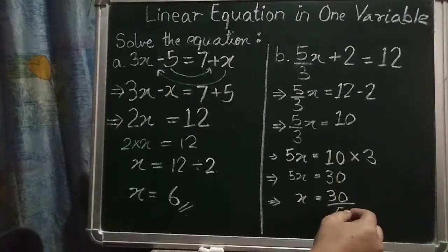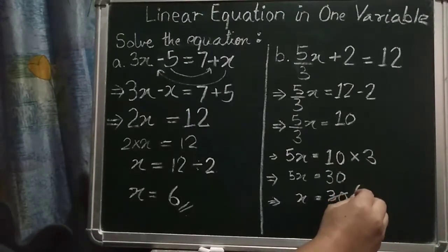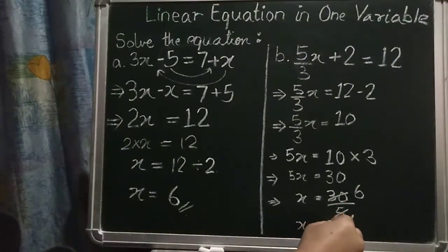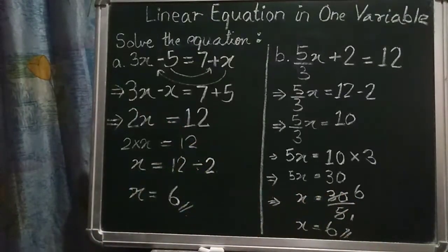So we can cancel that, 5, 1s are 5, 5, 6s are 30. Again, the answer is 6 only. I hope you understand.